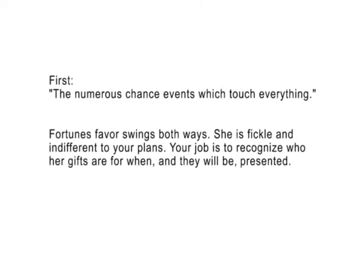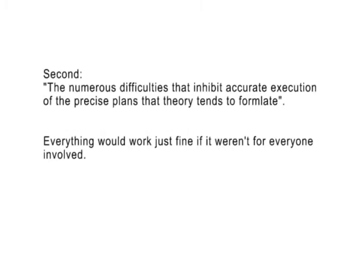He notes that friction comes from two sources: the numerous chance events which touch everything — think of the environment — and the numerous difficulties that inhibit accurate execution of the precise plans that theory tends to formulate. This refers to other people.